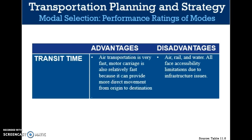Transit time is critical in supply chain management because of its impact on inventory availability, stockout costs, and customer satisfaction. Transit time is the total elapsed time it takes to move goods from the point of origin to the destination — door to door. The transit time advantage goes to air transportation because it is very fast. Motor carriage is also relatively fast as it can provide more direct movement from origin to destination. Rail, water, and pipeline have a disadvantage as they are extremely slow.